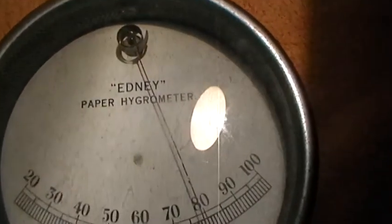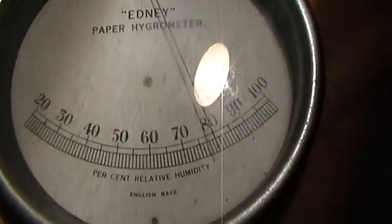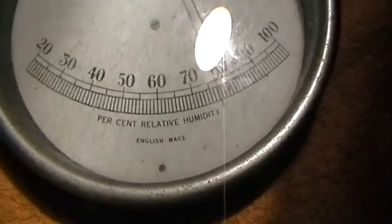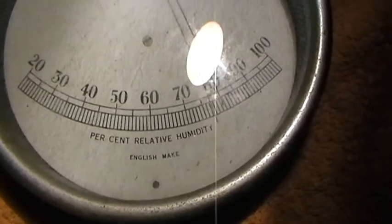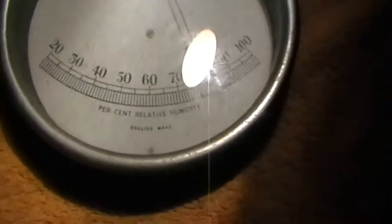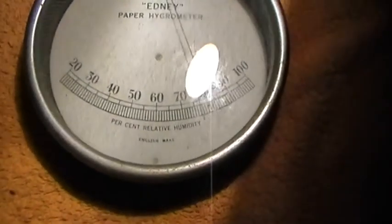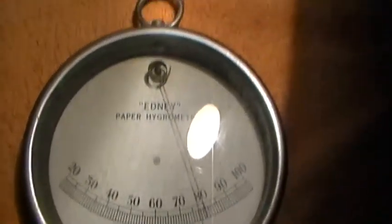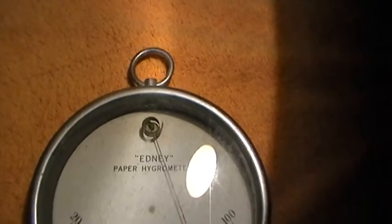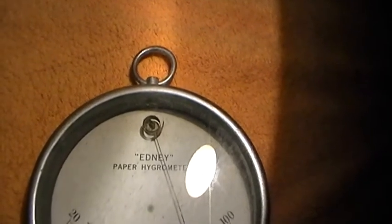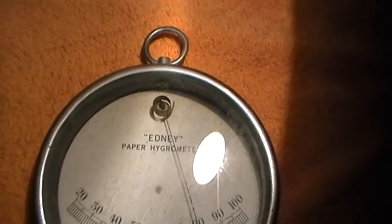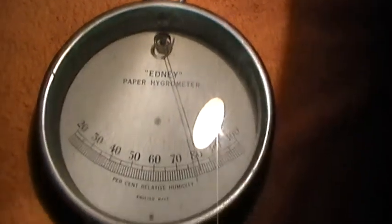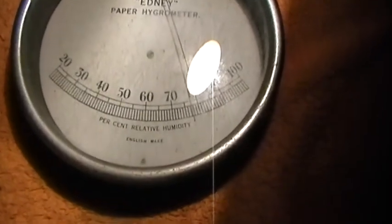There are other types of hygrometers. There's one called Mason's type which consists of two mercury tubes side by side. One has a wick on it which is dipped into water, and the evaporating water changes the actual temperature. And you have charts which you can compare the two readings.